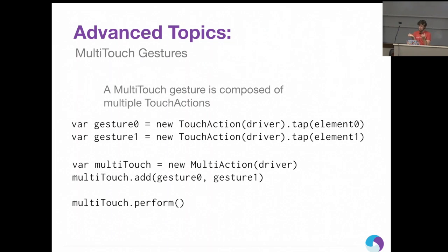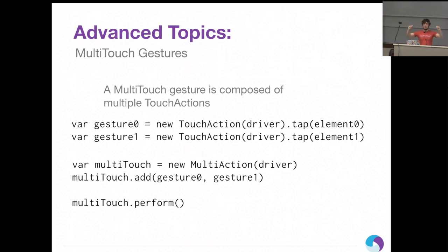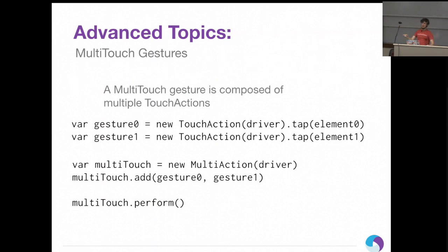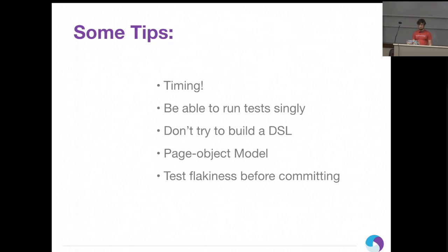For multiple touch gestures, you create multiple gesture objects without performing them, chain them up and add them to a multi-touch object, then tell that to perform. It does the whole gesture step by step for all fingers simultaneously. If gestures have different timings, it'll still put them together — it's a bit of a weird spec, but technically anything is possible.